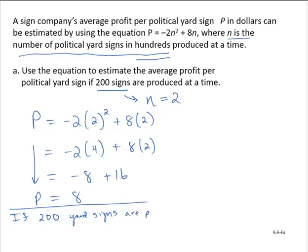If 200 yard signs are produced at one time, the average profit per sign is $8.